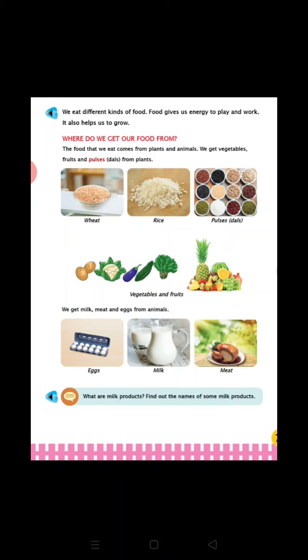Now we will learn about kinds of food. We eat different kinds of food. For example, milk, fish, egg, and pulses. Fruits and vegetables keep us healthy. Rice, sugar, butter, chapati, and bread give us energy.